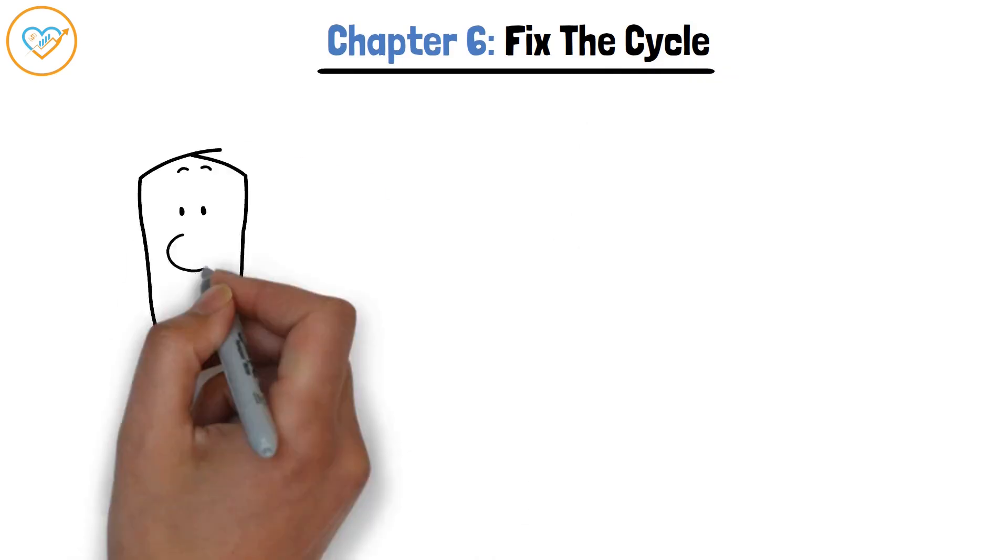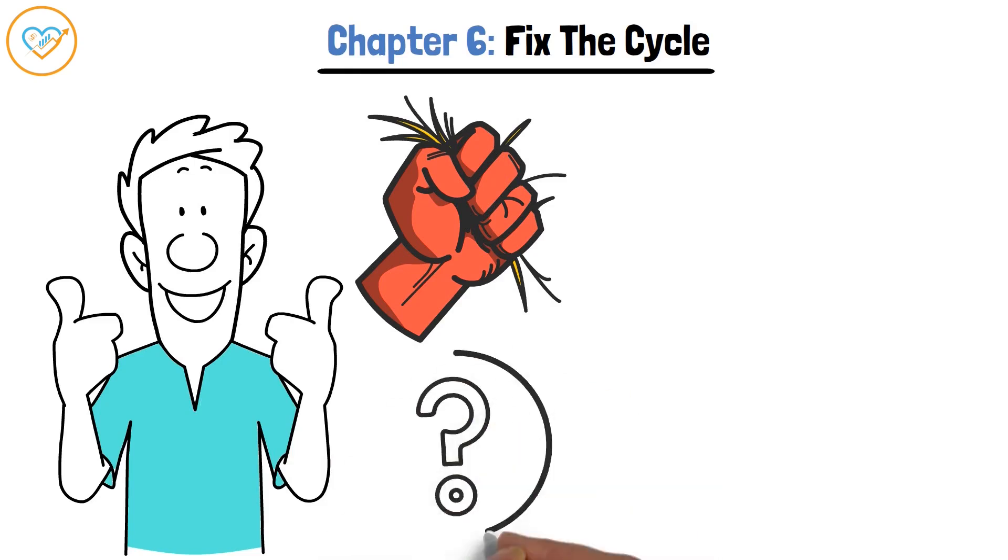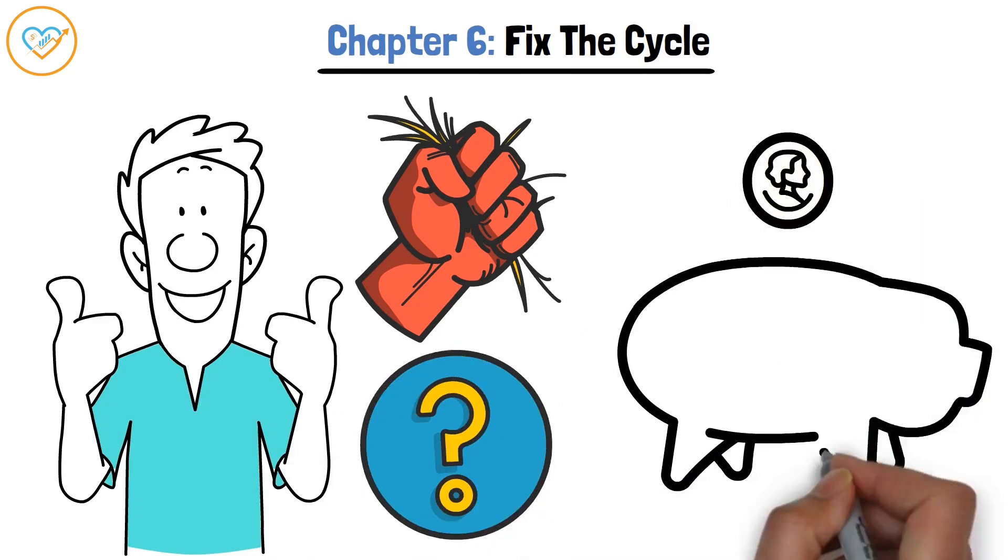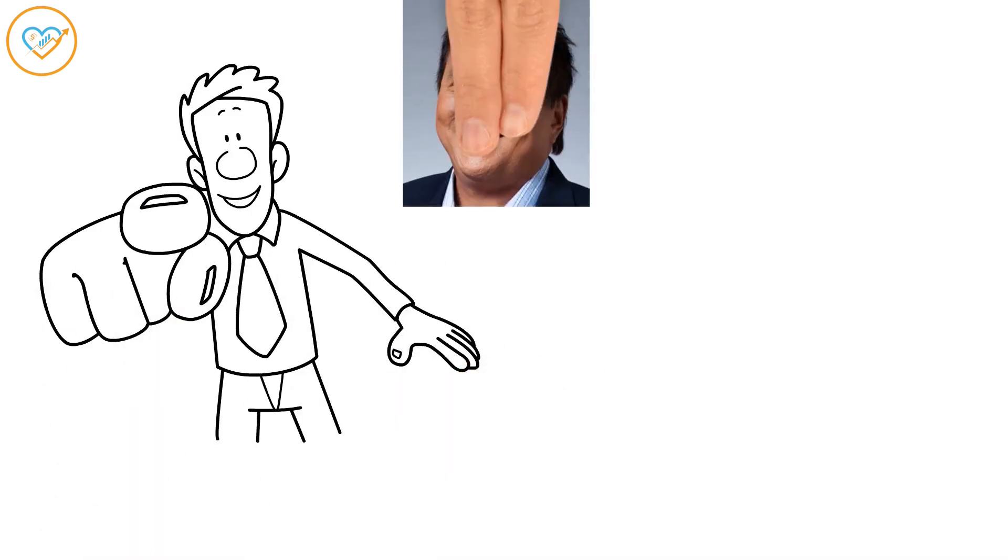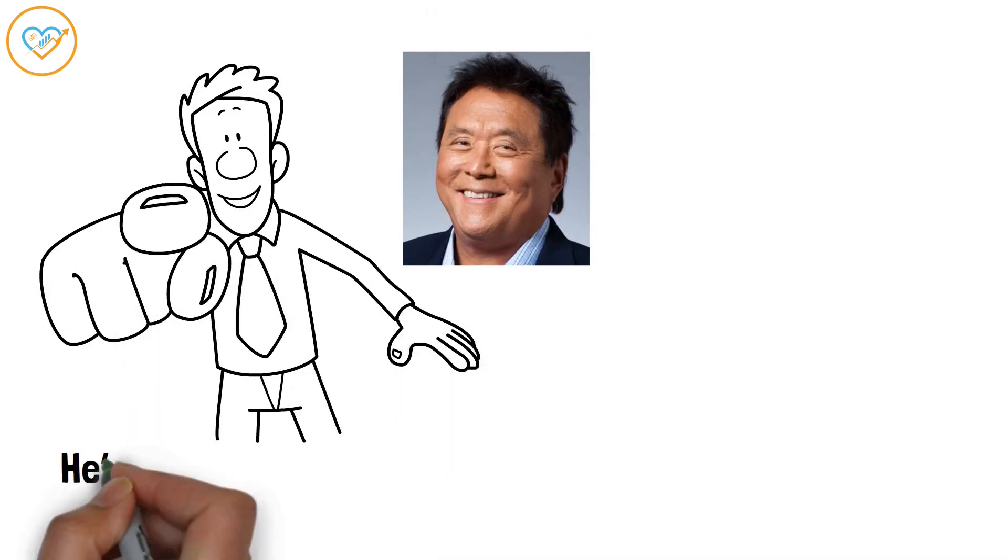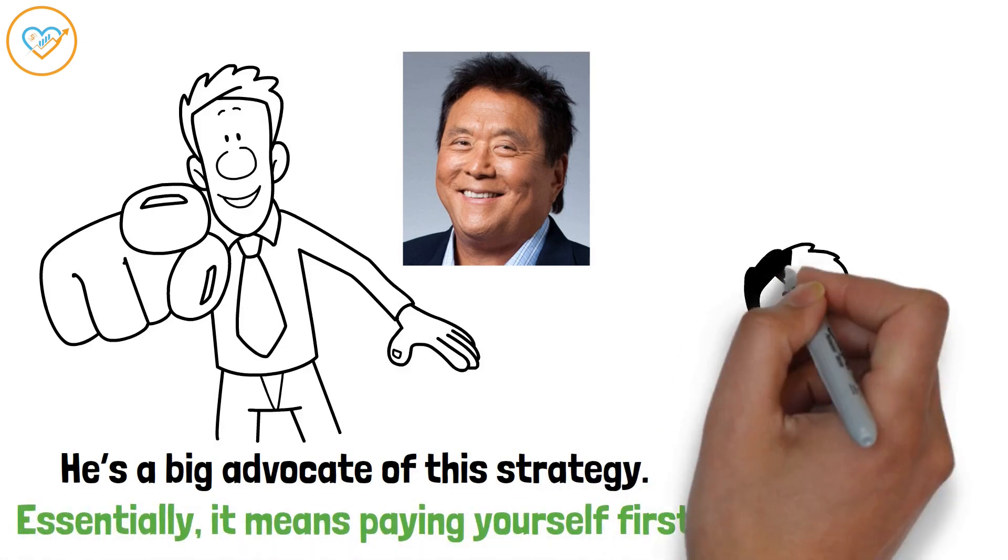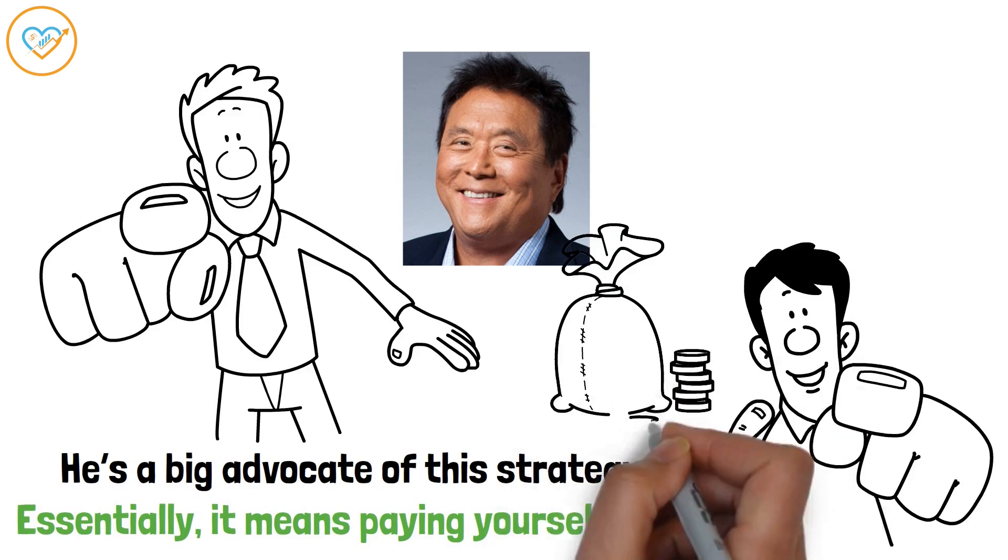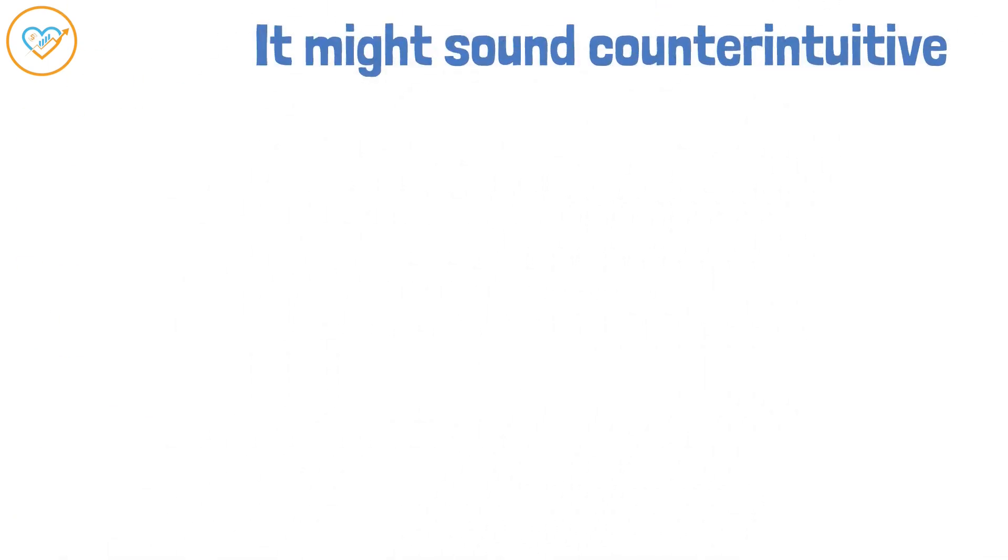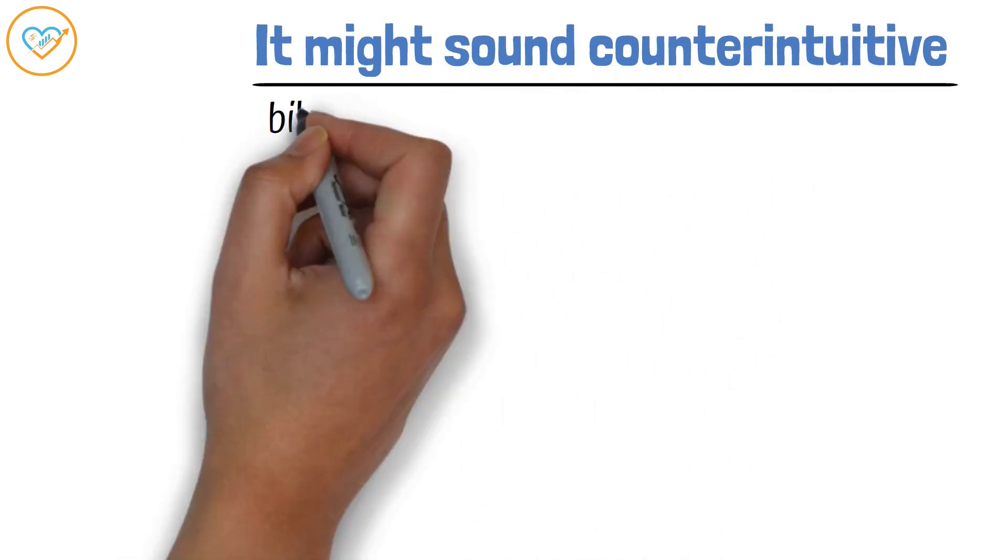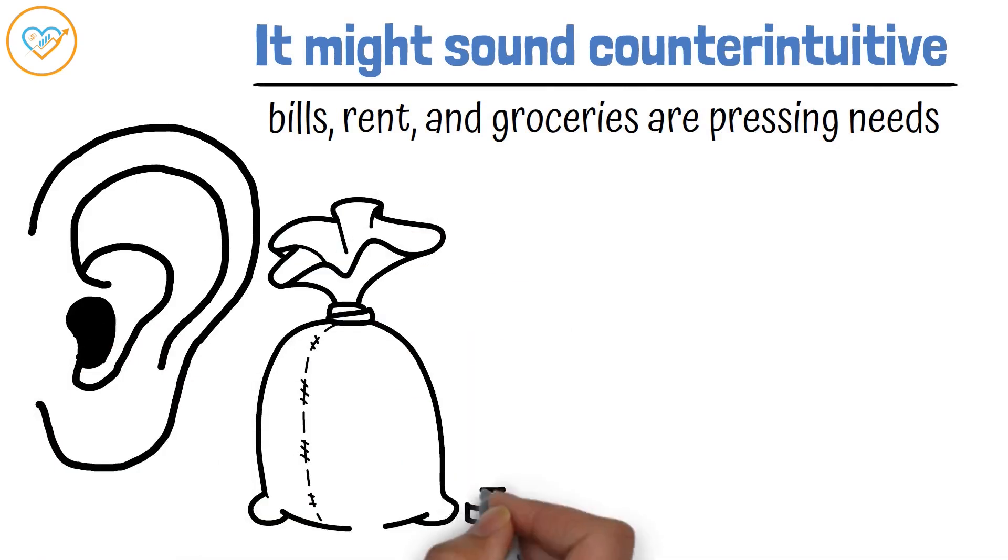All right, I promised you a secret weapon to supercharge your financial journey. Are you ready? It's called Save First. You've probably heard of the popular financial guru, Robert Kiyosaki. He's a big advocate of this strategy. Essentially, it means paying yourself first. Before you spend a single dime on anything else, allocate a portion of your income to savings. It might sound counterintuitive. After all, bills, rent, and groceries are pressing needs. But hear me out.